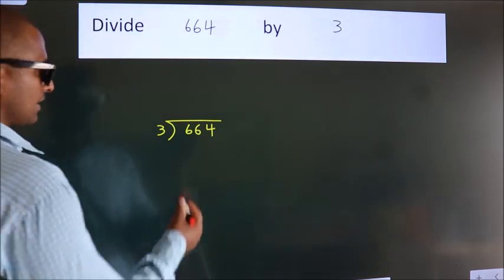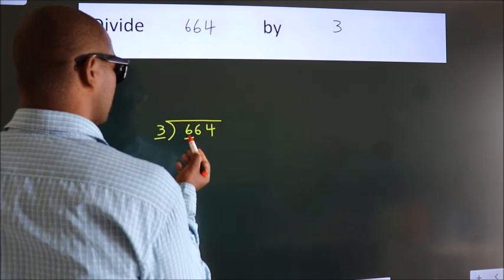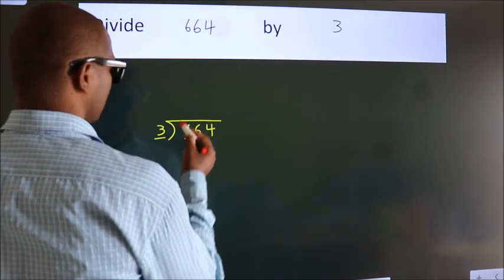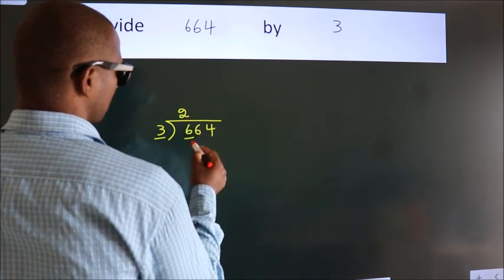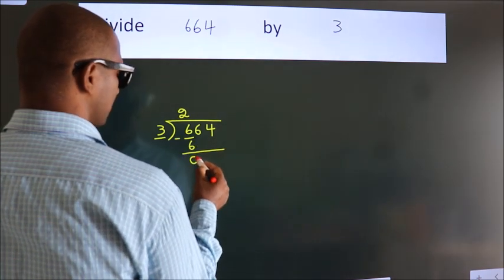Next. Here we have 6, here 3. When do we get 6? In 3 table. 3 twos, 6. Now, we should subtract. We get 0.